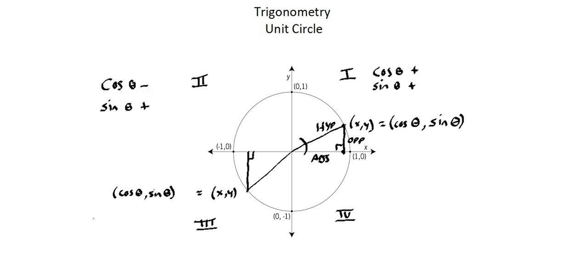In quadrant three, both values are negative. X,y coordinates are both negative. So cosine of angle is negative. And sine of angle is negative.